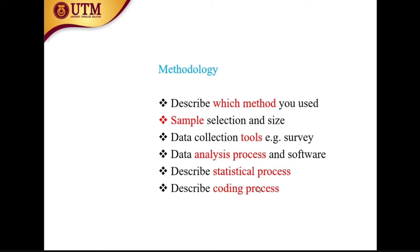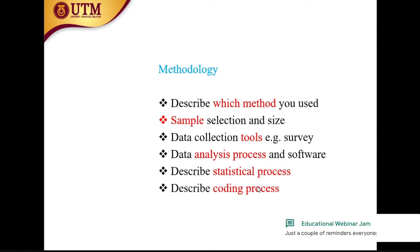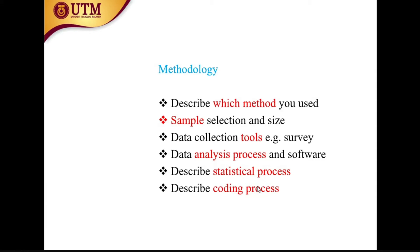Under the methodology section, you will mention: first, describe your method and how it will be implemented for your study. Then your sample — with whom you did this research. Then mention data collection tools like survey, interview, and observation. After this, data analysis process and software — what types of analysis you used and what software. Then describe the statistical process for quantitative study or mixed method, and the coding process for qualitative and mixed method.